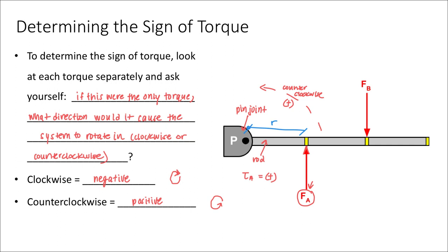Simple as that. Now, if we look at force B alone, forgetting about force A, what direction would force B cause this door to rotate in? It would cause the door to start rotating that way. And what is that direction? That's clockwise.